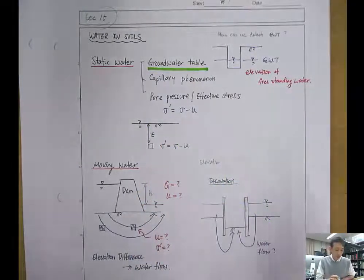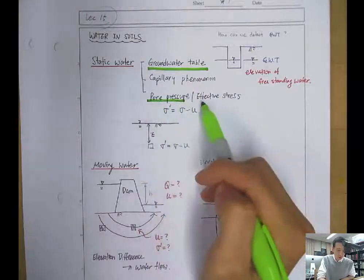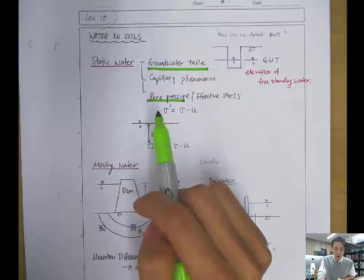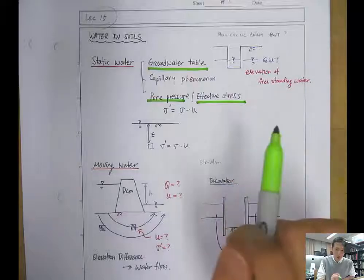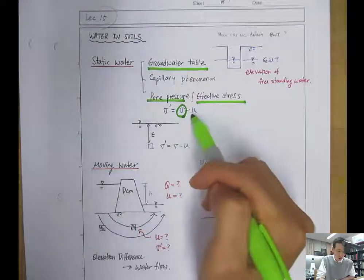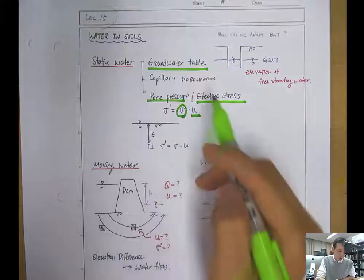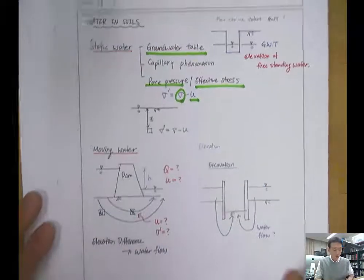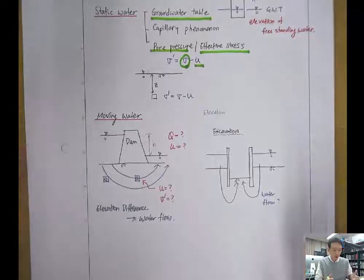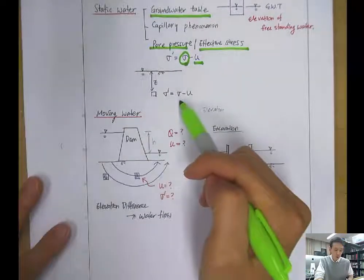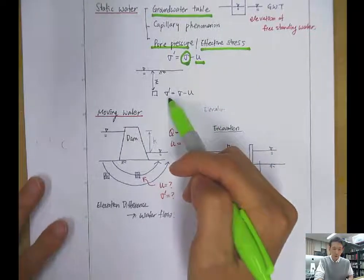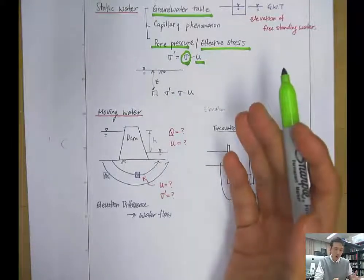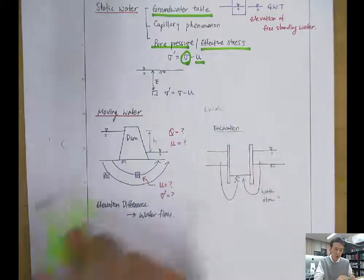We've seen how to compute the pore pressure and from that we can also compute the effective stress. To estimate the effective stress, we need to know the total stress sigma and the pore water pressure U, and from that we can compute sigma prime. So now that we know how to compute the total stress, pore water pressure, and effective stress at a certain depth of interest — for that we need to know the density profile and the location of the groundwater table.